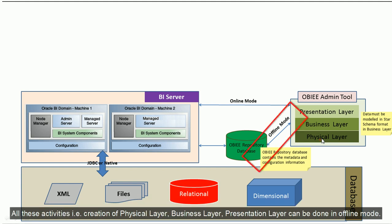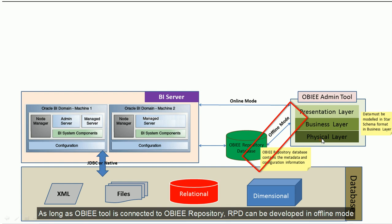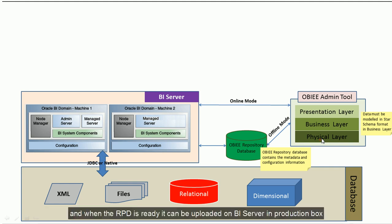All these activities — the creation of the physical layer, business layer, and presentation layer — can be done in offline mode. As long as the OBIEE admin tool is connected to the OBIEE repository, the RPD can be developed offline. When the RPD is ready, it can be uploaded to the BI server in the production environment, and then the presentation layer will be visible in OBIEE reports.